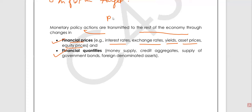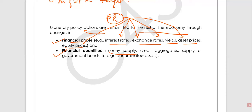When policy rates are changed, these policy rates influence the prevailing interest rates, exchange rates of the currency, yields, asset prices, as well as the equity prices in the financial markets. At the same time, these policy rates also influence the money supply in the economy, credit aggregates — that means how much loans the banks are giving out — supply of government bonds, and foreign denominated assets.